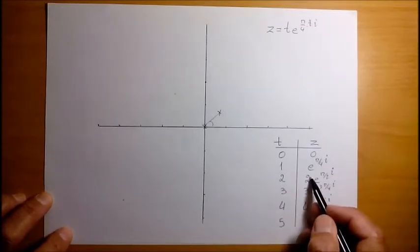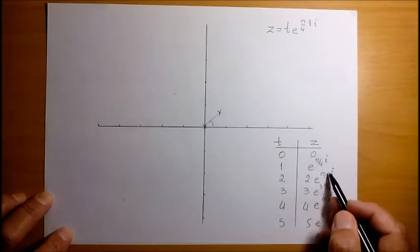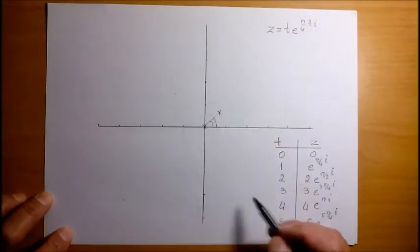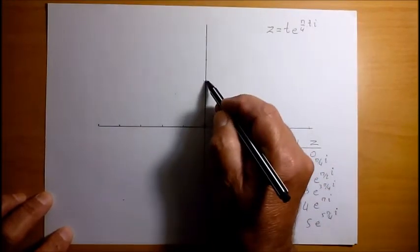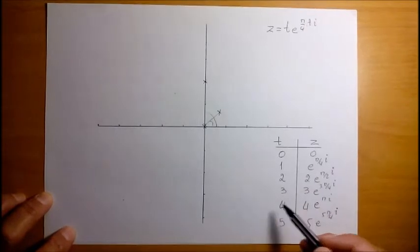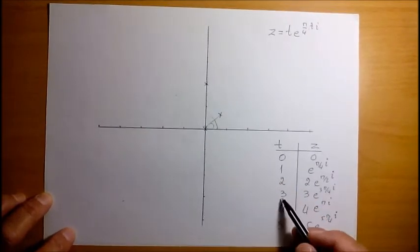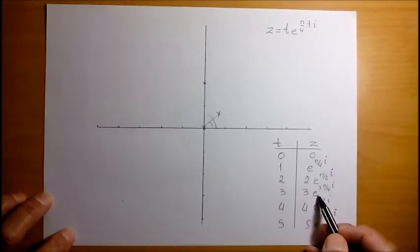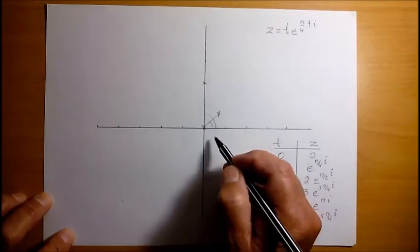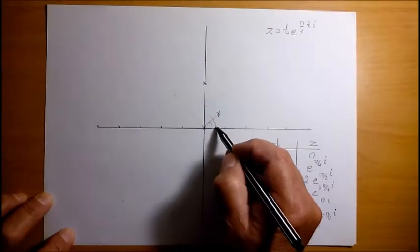For t equals 2, we have modulus 2 and angle or argument pi by 2, which is here, and its modulus is this, so it is here. Our third one, for t equals 3, we have modulus 3 and its angle is 3 times pi by 4. 3 times pi by 4 is somewhere here, so our complex number is here.